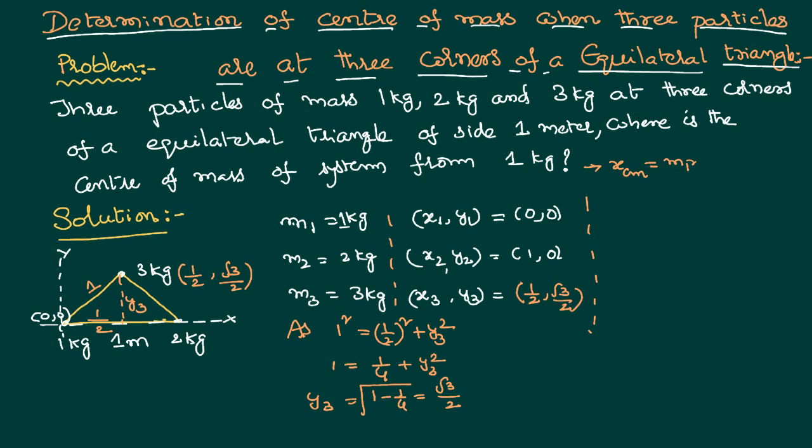I can write x_cm as M1 x1 plus M2 x2 and M3 x3 by M1 plus M2 plus M3. By substituting the values we know that M1 is 1, x1 is 0, M2 is 2, x2 is 1, M3 is 3, x3 is half as per the data that we have just now identified. By M1 plus M2 plus M3 is 1 plus 2 plus 3, so our answer is going to be 2 plus 3 by 2.